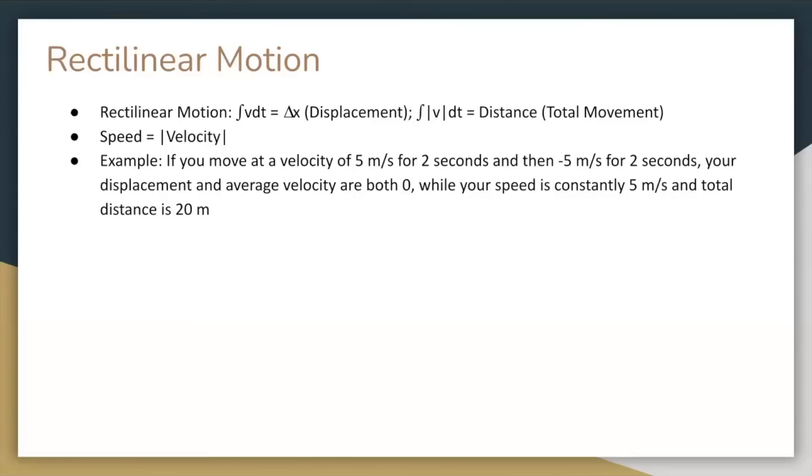Starting with rectilinear motion, there are important differences between terms which seem similar. Displacement is the change in position, while distance is the total amount moved. Velocity has both the magnitude and direction, so if you're moving in the negative x direction, it could be negative. And speed is the absolute value of velocity. So for example, if you move at a velocity of 5 meters per second for 2 seconds, and then negative 5 meters per second for 2 seconds, you can integrate velocity with respect to time to get that your displacement and average velocity are both zero because you end up where you started, while your speed is constantly 5 meters per second, and your total distance is 20 meters.